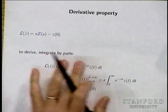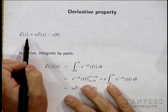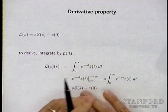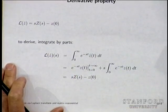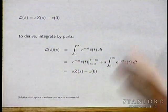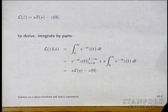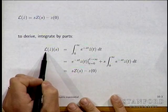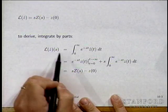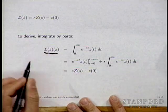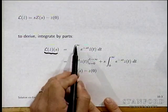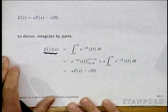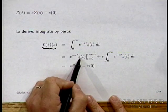Let's look at the derivative property. It says the Laplace transform of the time derivative of a signal is S times the Laplace transform of the signal minus the initial value. This is the basic, essential property of Laplace transforms. You look at the Laplace transform of Z-dot evaluated at S — that's a p-by-q complex number — and by definition it's the integral of e to the minus ST times Z-dot of T, DT. We integrate by parts.